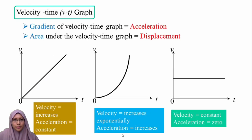For the velocity-time graph, the gradient of the velocity-time graph equals acceleration, and the area under the velocity-time graph equals displacement. If the velocity is increasing with a constant gradient, the acceleration is constant. If the velocity is increasing exponentially with an increasing gradient, the acceleration is increasing. If the velocity is constant, the acceleration is zero.